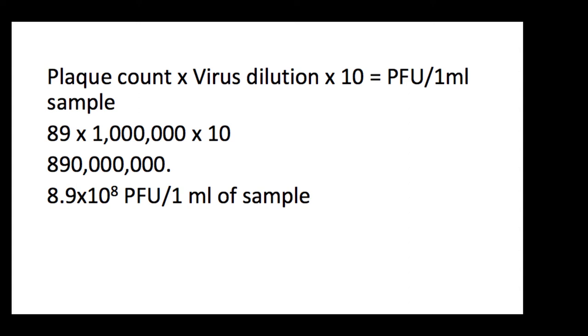So, I thought we'd try one more again to set up your math. Plaque count times virus dilution times 10 to give us PFU per 1 milliliter of sample. So, this time, our plaque count is 89. Our virus dilution is 1 million. We're going to multiply that by 10.